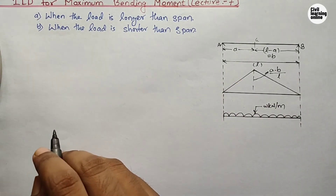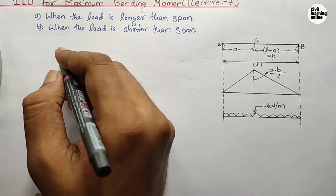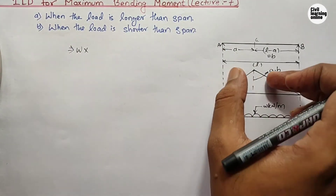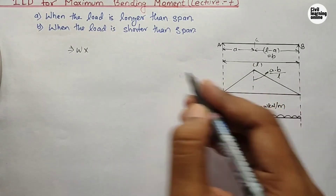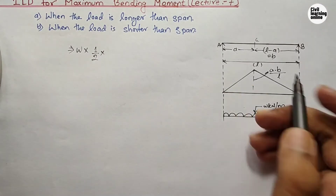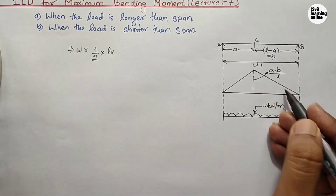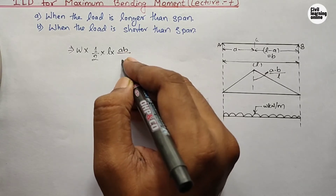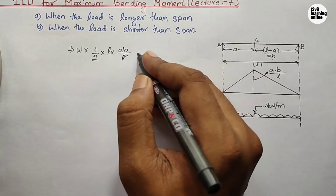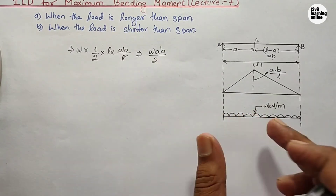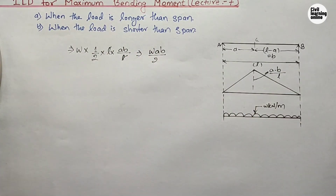The maximum bending moment equals the load intensity multiplied by the area under the influence line triangle. The area of the triangle is half times base times height, which is (1/2) × L × (a·b / L). The L cancels, giving: maximum bending moment = w·a·b / 2. This is the formula for maximum bending moment when the load is longer than the span.